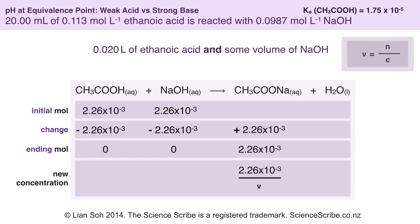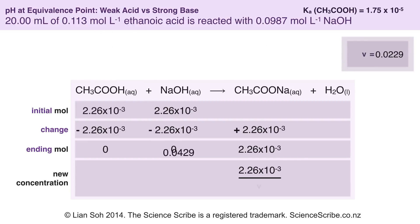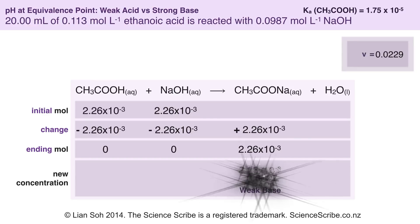The number of moles of sodium hydroxide is the same as the number of moles of ethanoic acid, and the concentration of sodium hydroxide is given in the question. Substituting those values into the formula gives a volume of sodium hydroxide of 0.0229 litres — if you were sketching a titration curve you would need this volume on your x-axis. This means the total volume in the flask at equivalence point is 0.0429 litres, which lets me calculate the concentration of sodium ethanoate.